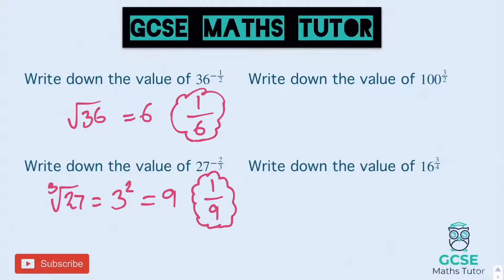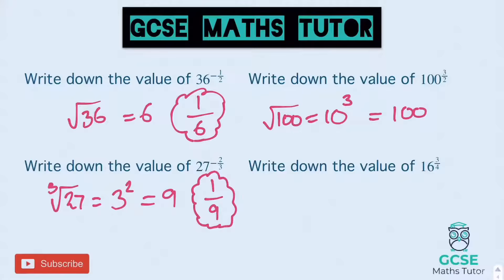Write down the value of 100 to the power of 3 over 2 — no negative, but we've got a 2 on the bottom so we do the square root first. The square root of 100 is 10. Then we've got a 3 on the top, so we need to cube that. 10 cubed is 10 times 10 times 10 — 10 times 10 is 100, times 10 again is 1,000. So my final answer is 1,000.